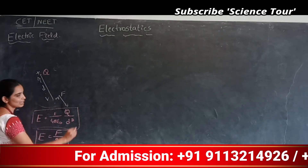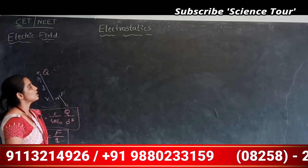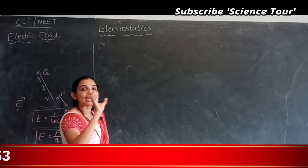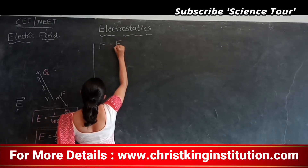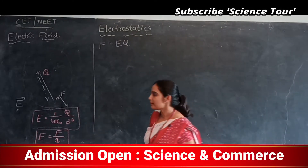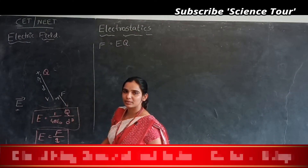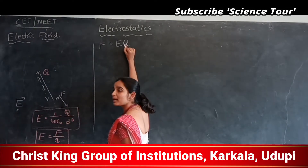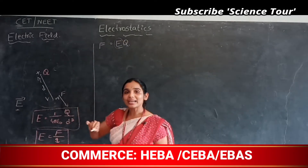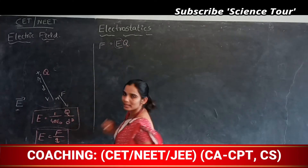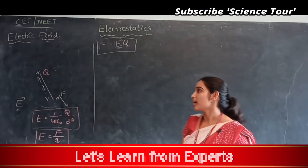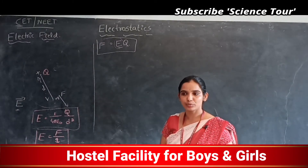Electric force experienced by charge Q in electric field intensity E is F = EQ. The direction of electric field intensity is along the direction of force experienced by the charge. The electric force is independent of the mass and velocity of the charged particle; it depends only on the charge.